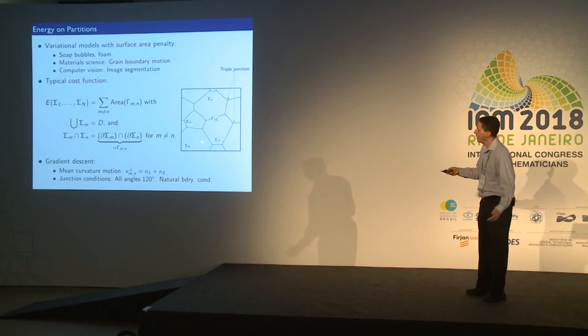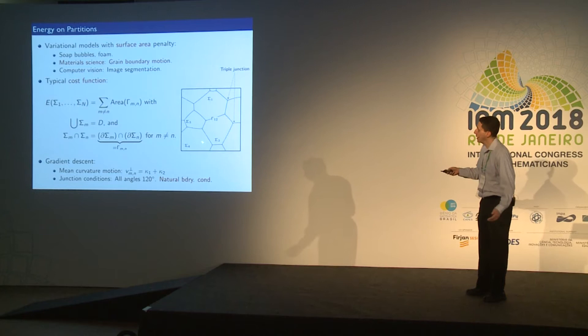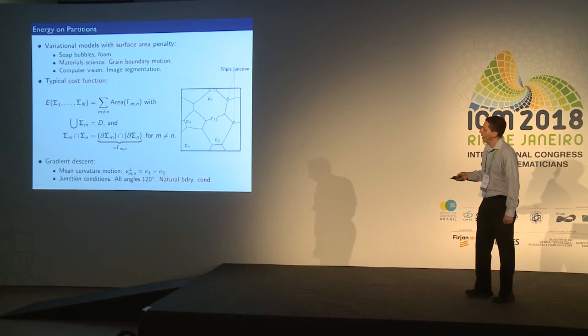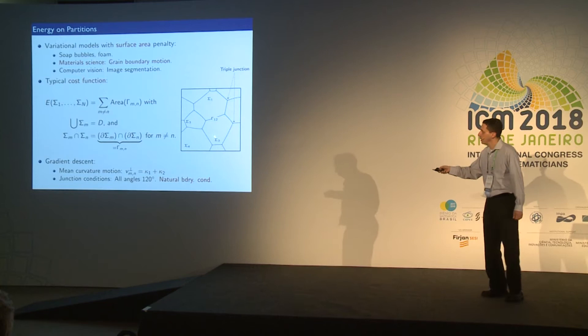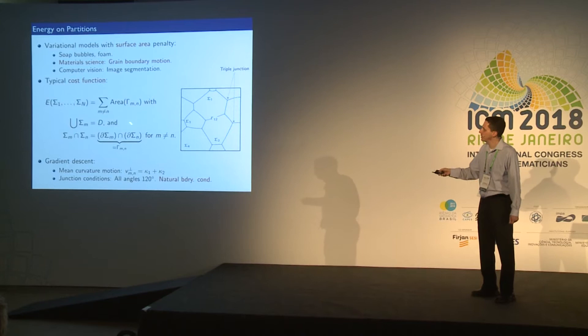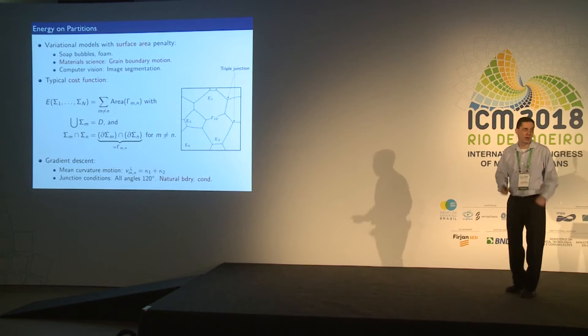Typically we will be working in a domain D, which will be a rectangle in R2 or a cube in R3 with periodic boundary conditions. Our cost function is defined on partitions of such a domain. By a partition, we mean a number of sets sigma 1 through sigma N that fill up the entire domain — their union is the entire domain D, they are essentially disjoint, overlapping only along their boundaries. There is no vacuum and no overlap allowed.